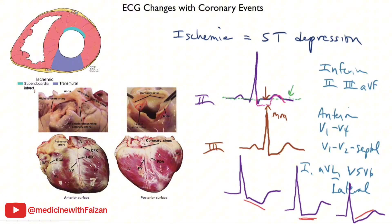When measuring how much ST segment depression there is, we generally measure the ST segment at 80 milliseconds after the J point. The J point is where the QRS complex ends and the ST segment starts. 80 milliseconds means 2 small boxes from the J point, and you measure it compared with the baseline, which is the interval that follows the T wave. When the heart rate is very fast — for example, if someone is on a treadmill exercising — the P waves and T waves tend to run into each other and the baseline becomes obscured. In that case, we use the PR segment as the baseline.